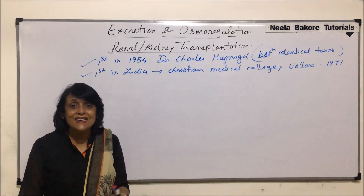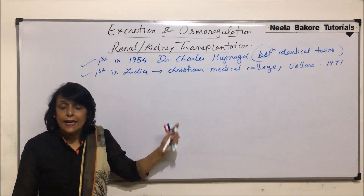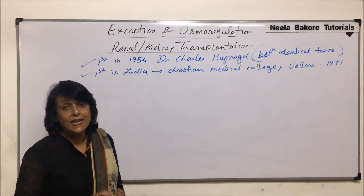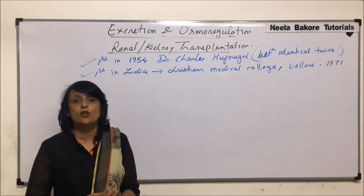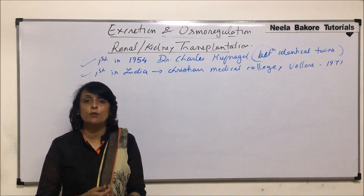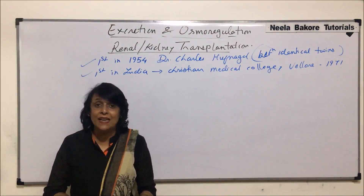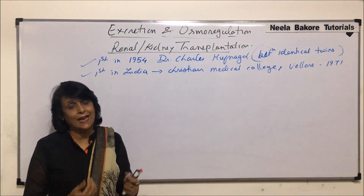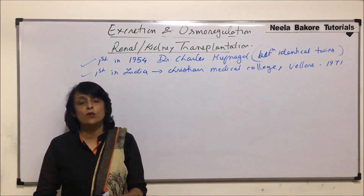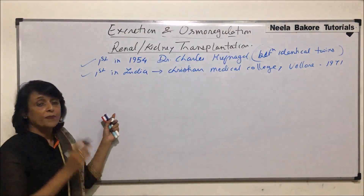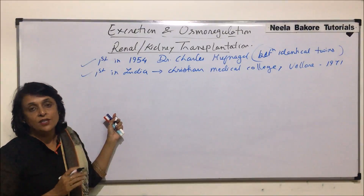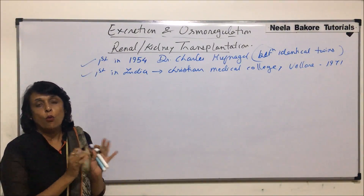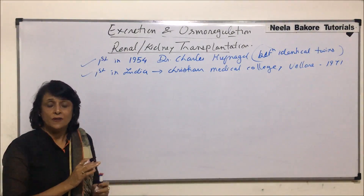Kidney transplantation is needed when both kidneys of a person have stopped functioning. If kidneys don't work, then toxic substances like urea, creatinine, and hippuric acid are not eliminated. They accumulate in the blood and tissues and start causing toxic effects, so kidney transplantation has to be performed.